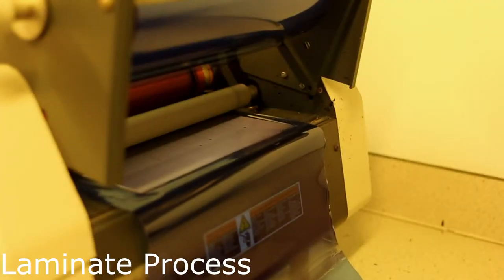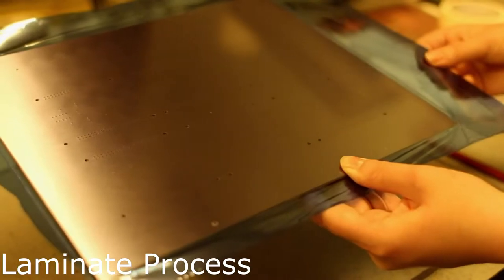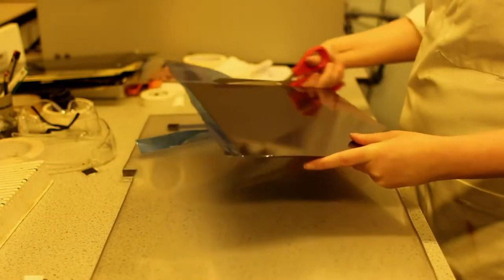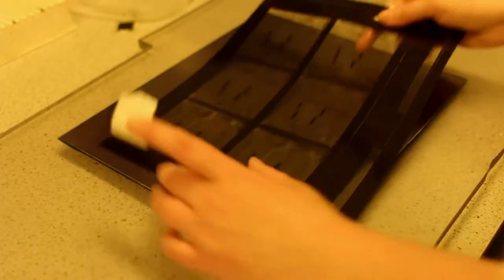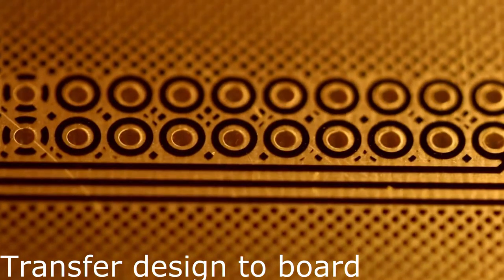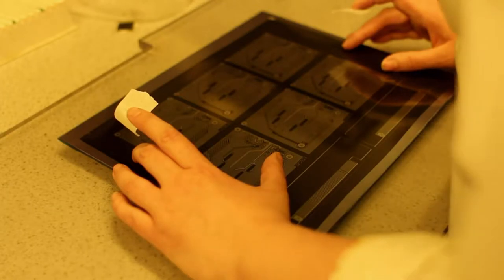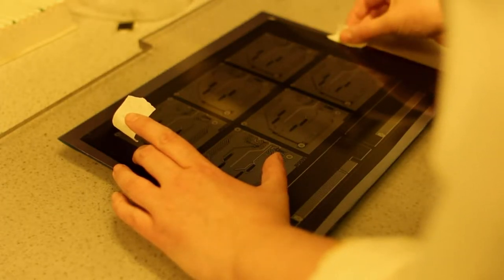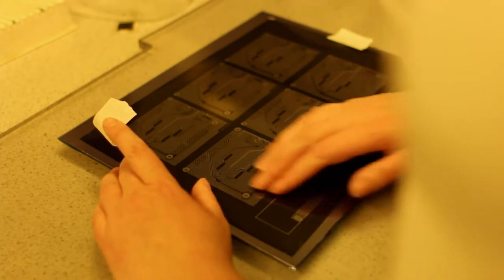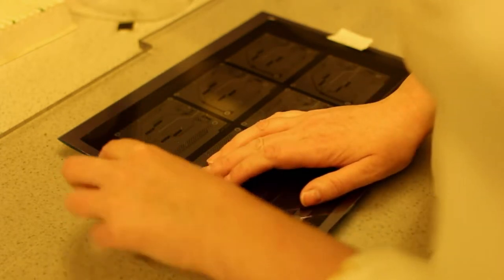The photoresist film hardens when exposed to UV light and remains soluble where it's covered by opaque areas of the transparency. The top and bottom photo film masks are applied to the board using the drill holes to accurately align them. If the design has tracks and pads beneath the minimum size and clearances aligning the transparency becomes unreliable.